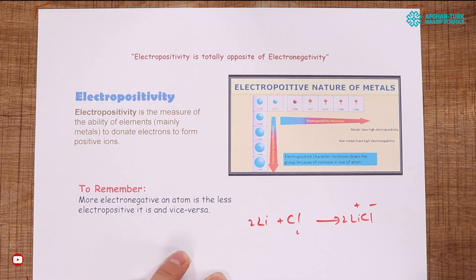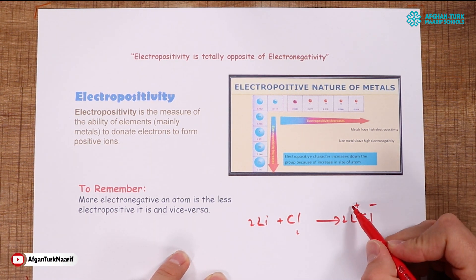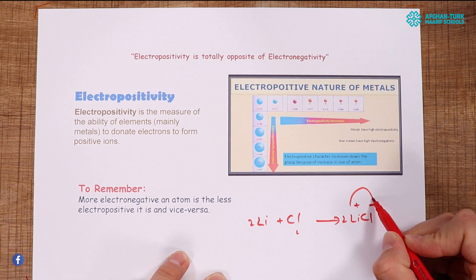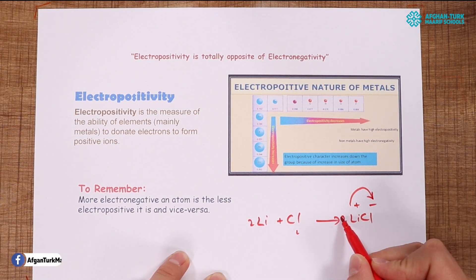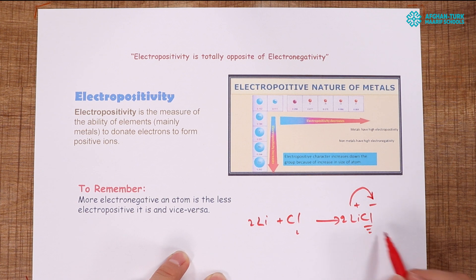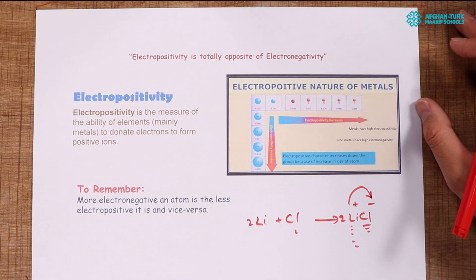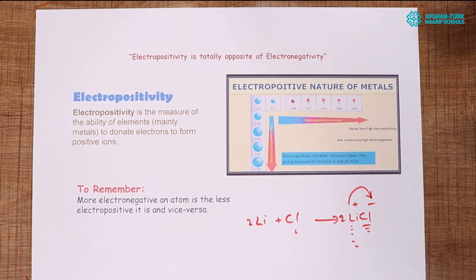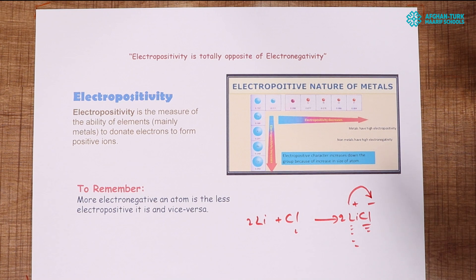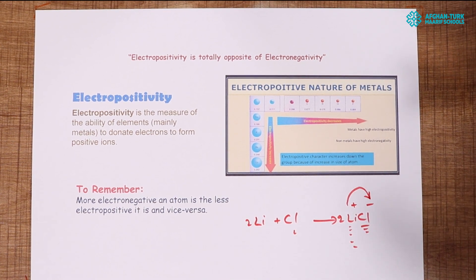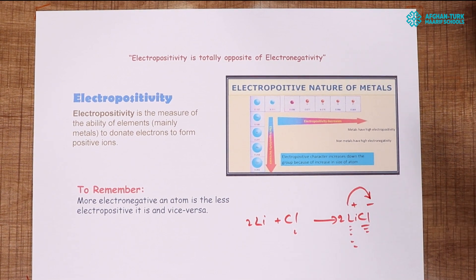Lithium has donated its outermost electron to chlorine because chlorine is electronegative and lithium is electropositive. Remember: the more electronegative an atom is, the less electropositive it is. If an atom is more electropositive, it will be less electronegative, and vice versa.